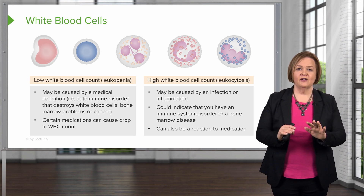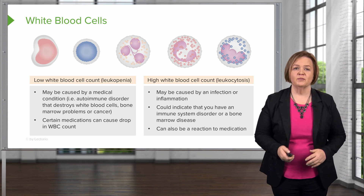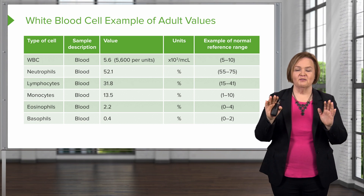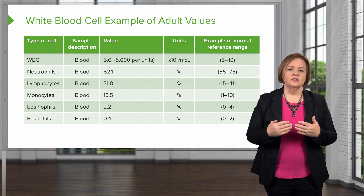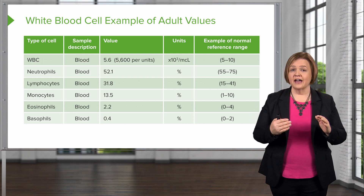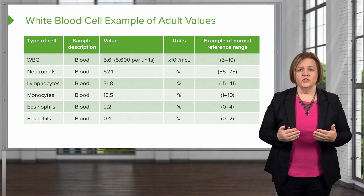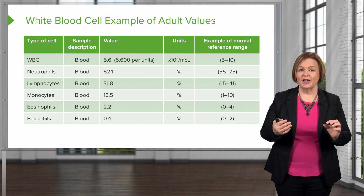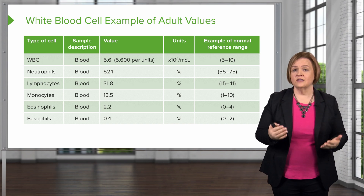We've talked about the five types of white blood cells, the reasons for low white blood cells, and the reasons for high white blood cells. Now there are a lot of numbers on this slide, but don't worry — this is just here as a reference. These are example adult values; keep in mind every lab will have slightly different reference ranges, which they'll post with your lab work. So don't take this slide as the only reference we can use.